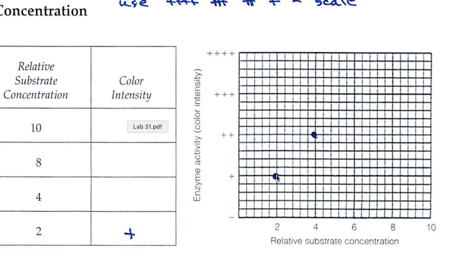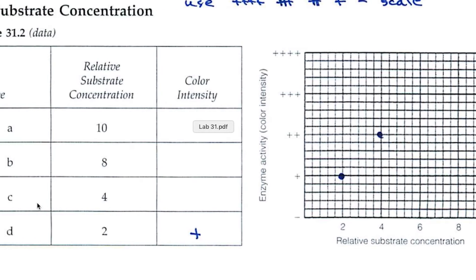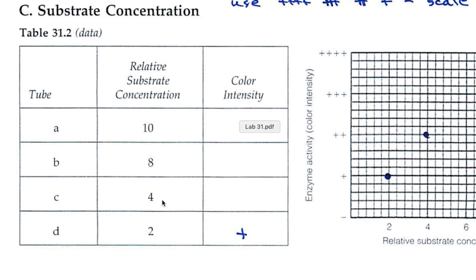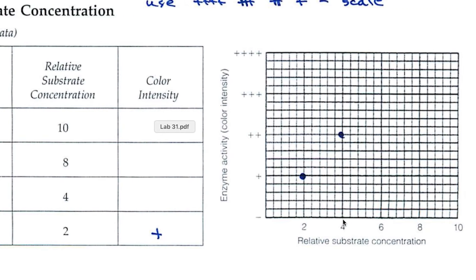You'd do that with each piece of information. So let's say that test tube C, with a relative substrate concentration of 4, well, maybe it would give us 2 pluses. We'd come down to 4 again and go up with a hypothetical line, come across from plus, plus, where those two hypothetical lines intersect, we'd place a point. You'd do that for test tube B and test tube A. So you'd have 4 points on this graph, then you'd take a line and draw a smooth line connecting those points. And that's how you construct a graph.